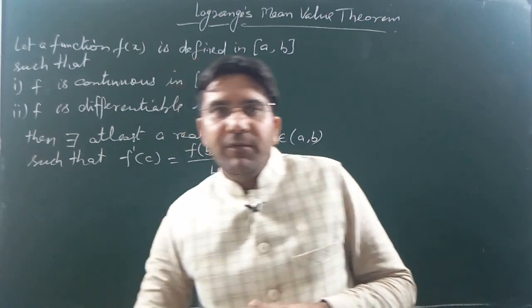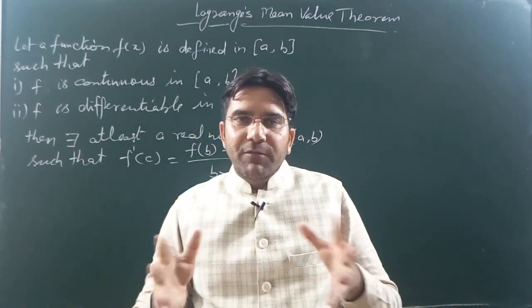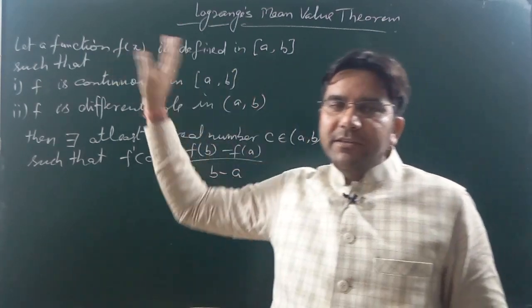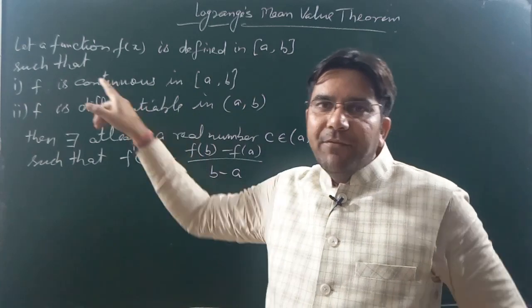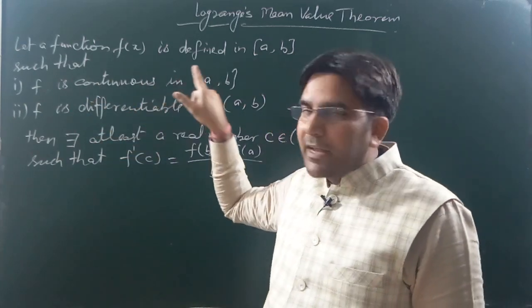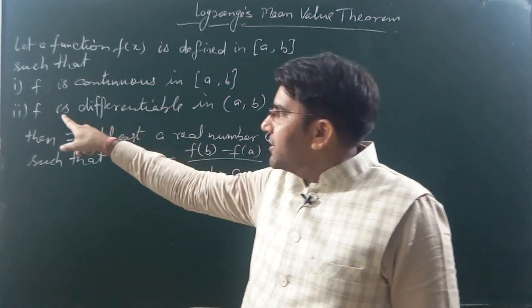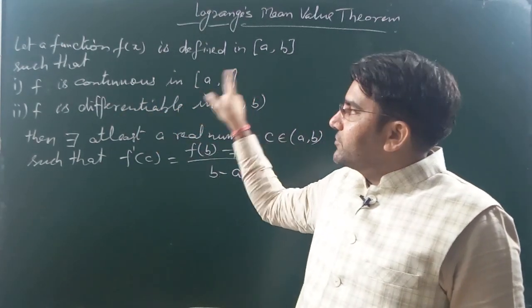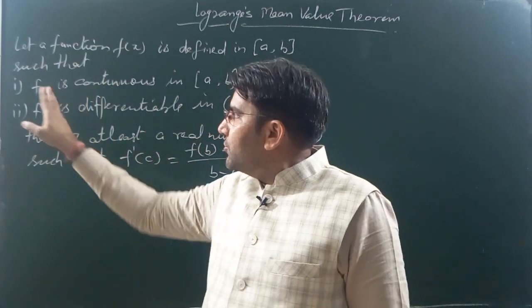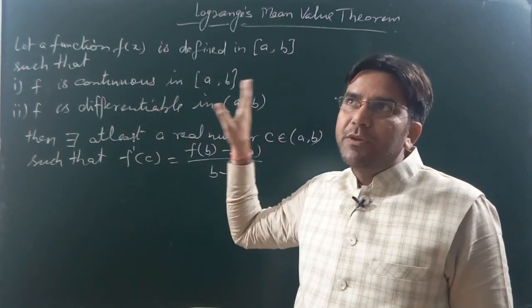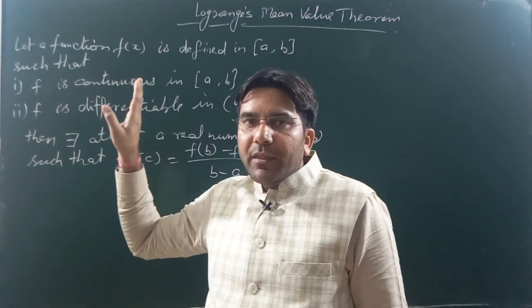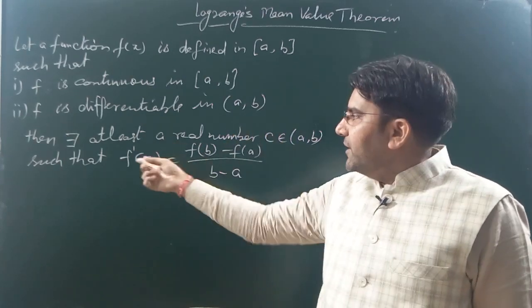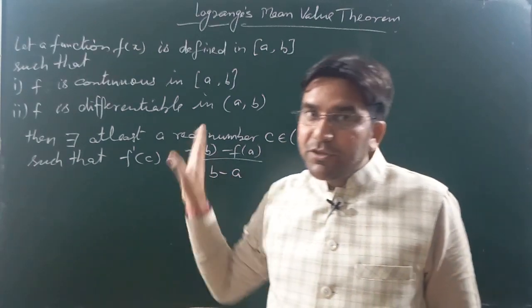The statement of Lagrange's theorem says: given a function f(x) defined in a closed interval [a, b], the function f(x) should be continuous in the closed interval [a, b], and should be differentiable in the open interval (a, b). Differentiability cannot be checked in the closed interval so we take it in the open interval. Then Lagrange says there must be at least one real number c in the open interval (a, b) such that f'(c) equals f(b) minus f(a) upon b minus a.